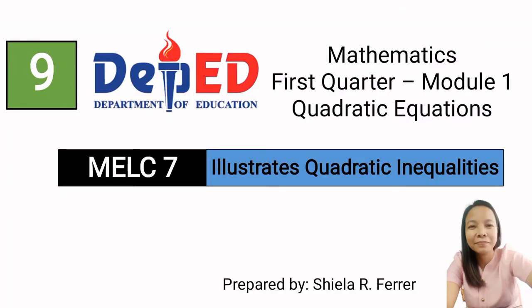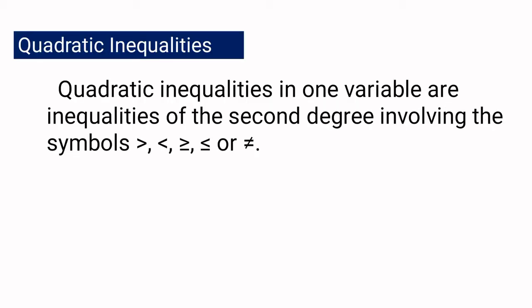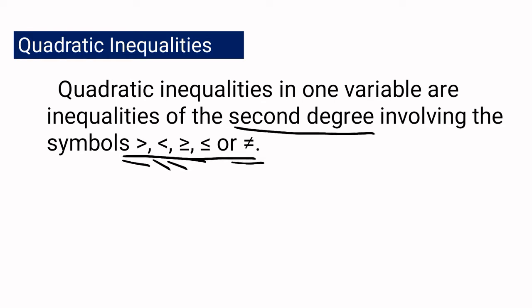We are now done with quadratic equations, so we are going to start today discussing about quadratic inequalities. Quadratic inequalities in one variable are inequalities of the second degree involving the symbols greater than, less than, greater than or equal to, less than or equal to, or not equal. If you see these symbols and the expression is in the second degree, then that inequality is a quadratic inequality.